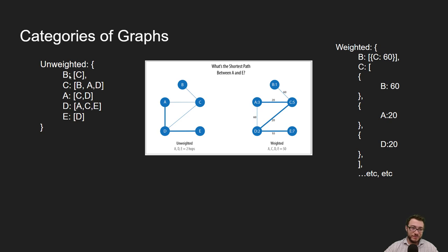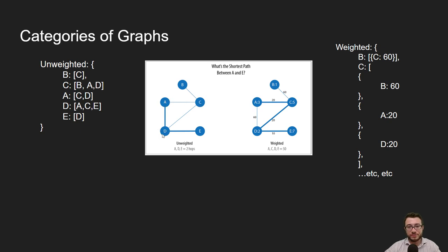In code, a graph looks like an object where the key is the node itself and the value is an array of edges or connections. B, for example, has one connection to C. C is connected to B, A, and D. For a weighted graph, instead of an array of strings, you have an array of objects — each object representing an edge with its weight value, like B to C having a weight of 60, and C to A having a weight of 20.